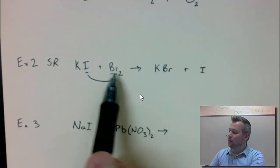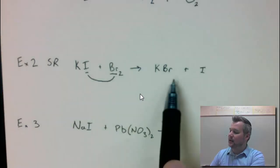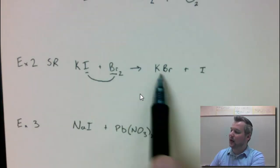And then I need to have iodine by itself. On the left side, bromine plays the role of being by itself, iodine is stuck. On the right side, they need to trade roles. Bromine is stuck, iodine is by itself.